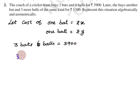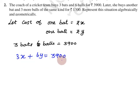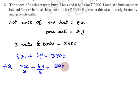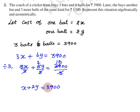Now we form the equation. 1 bat is x rupees, so 3 bats is 3x. 1 ball is y rupees, so 6 balls is 6y. Therefore, 3x + 6y = 3,900. Dividing the entire equation by 3, we get x + 2y = 1,300. This is Equation 1, the algebraic equation for the first condition.